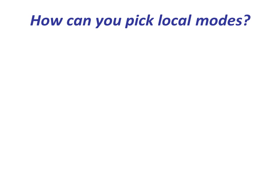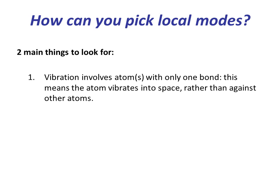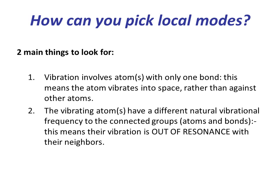So, how can we identify local modes? Well, there are two main things to look for. The vibration involves atoms with only one bond. This means that the atom vibrates into space rather than against other atoms. And two, the vibrating atoms have a different natural vibrational frequency to the connected groups, which means that their vibration is out of resonance with their neighbors.